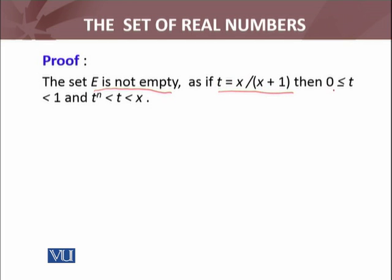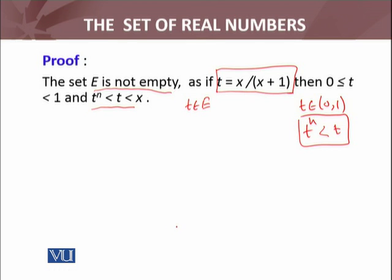That t is always between 0 and 1. Then t raised to power n—you know that if any real number t is between 0 and 1, and n is any positive integer, when you take its power n, the resulting number will be smaller than itself. For example, (0.5)² equals 0.25, which is less than 0.5. This is a property of numbers between 0 and 1. By this property, t^n is less than t, which is less than x. And by definition, this t = x/(x+1) belongs to the set E. So the set is not empty.